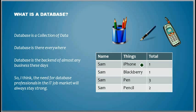Okay, I have an iPhone, and how many do I have? I have one iPhone, and then I also have a BlackBerry, and I have three pens and two pencils. So what is that? That's a database.